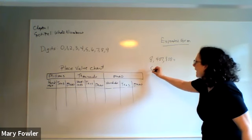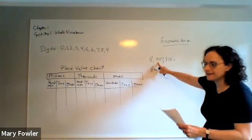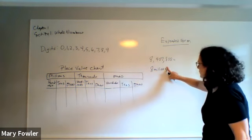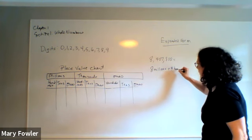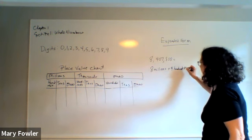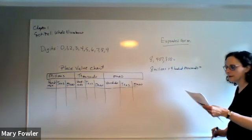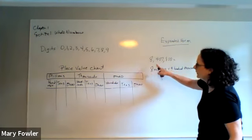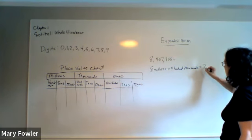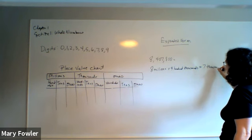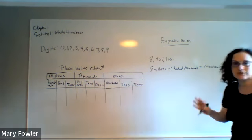All right, so in expanded form, this is the millions period, so it's eight millions. And the four is in the hundred thousands, so it's plus four hundred thousands. The seven is in the thousands, from the thousands place, seven thousands. You don't need to say thousand ones or one thousand, you just say thousands.